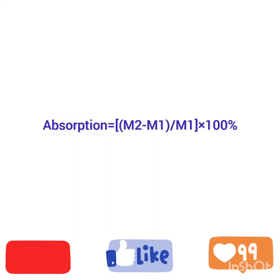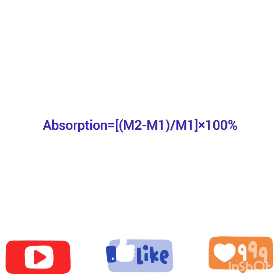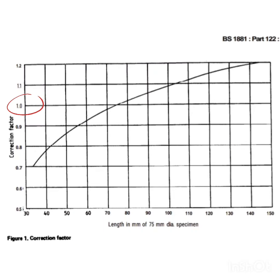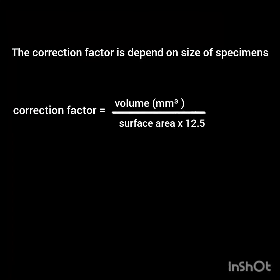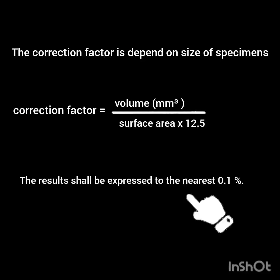For calculations, measured absorption equals M2 minus M1, divided by M1, multiplied by 100%. Where the specimen is not 75 mm long, a correction factor is obtained from a graph. The correction factor depends on the size of the specimen. The formula is: correction factor equals specimen volume divided by surface area into 12.5.